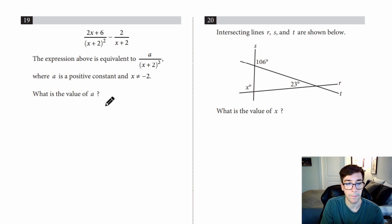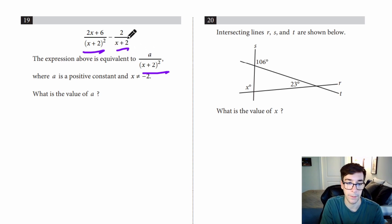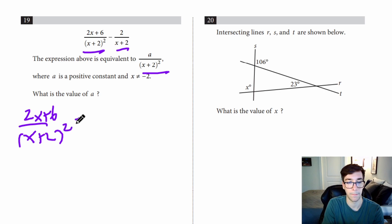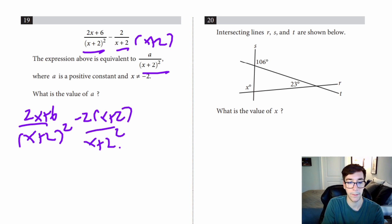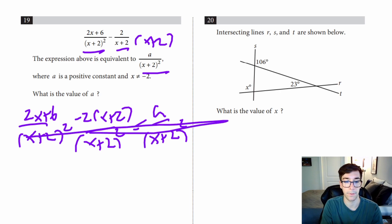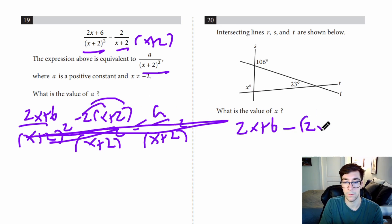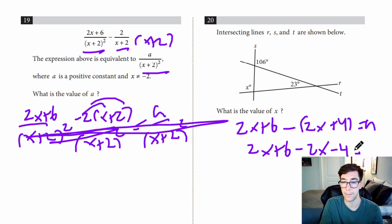Number nineteen: the expression above is equivalent to a over (X plus 2) squared, where A is a positive constant and X does not equal negative 2. What is the value of A? To get a common denominator, multiply the second fraction by (X plus 2). That gives (2X plus 6) over (X plus 2) squared minus (2X plus 2) over (X plus 2) squared equals A over (X plus 2) squared. Ignoring the denominator: 2X plus 6 minus 2X minus 4 equals A. The 2X terms cancel and 6 minus 4 is 2, so A equals 2.